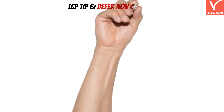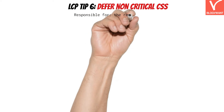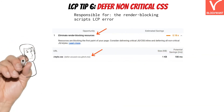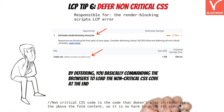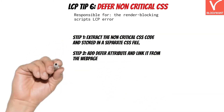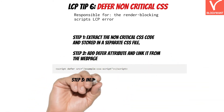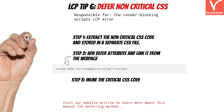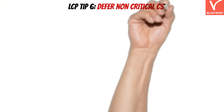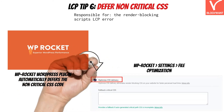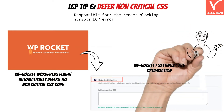LCP Tip 6: Defer Non-Critical CSS. If Google PageSpeed suggests deferring any CSS stylesheet, you should take action because it helps improve LCP time. By deferring, you command the browser to load the non-critical CSS code at the end, so no CSS files block the HTML parsing and the browser loads content faster. To defer non-critical CSS manually there are three steps: extract the non-critical CSS and store it in a separate file, add a defer attribute and link it from your web page, then inline the critical CSS code. Alternatively, the WP Rocket plugin also defers CSS — just enable the Optimize CSS Delivery option under the File Optimization tab.